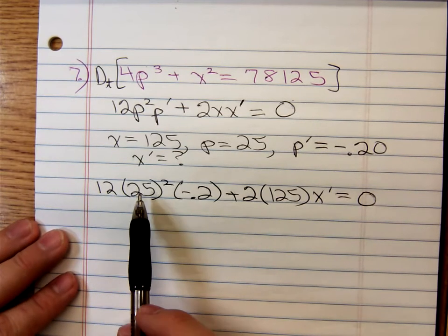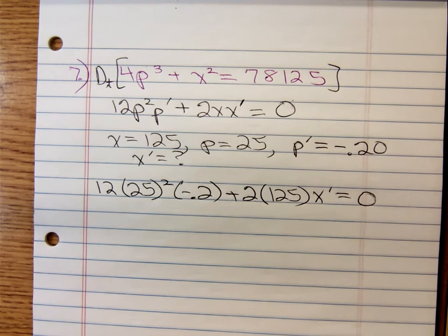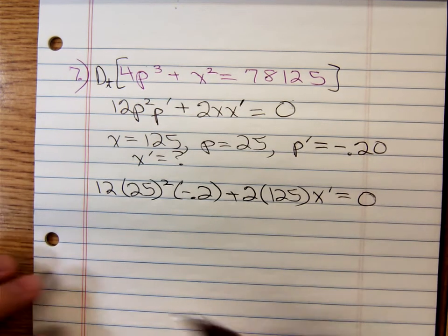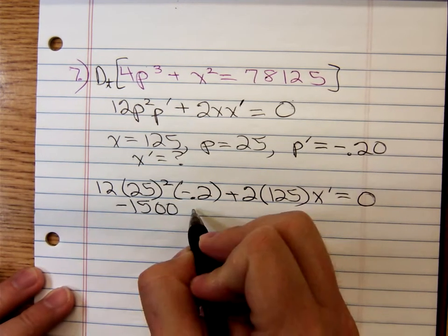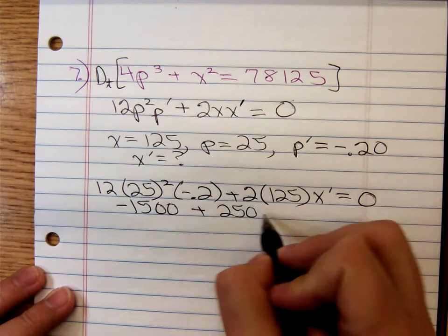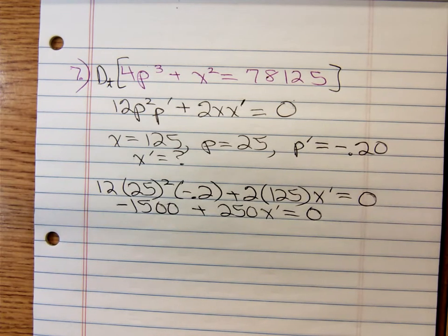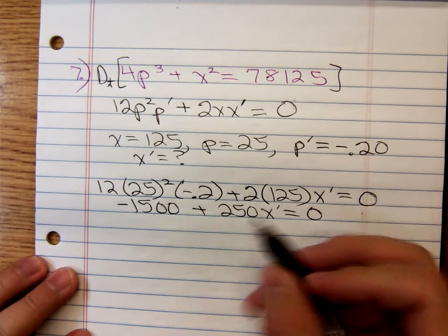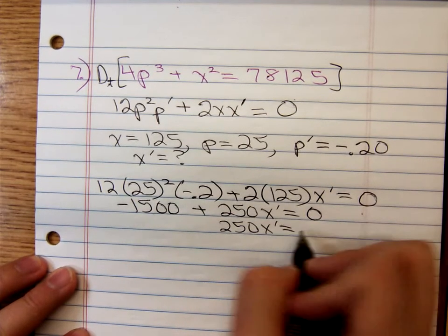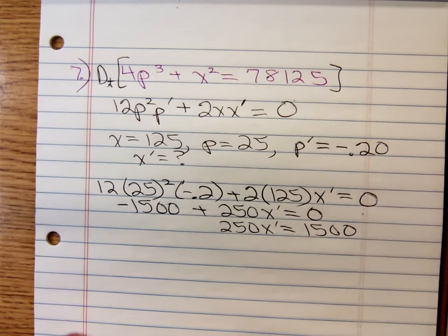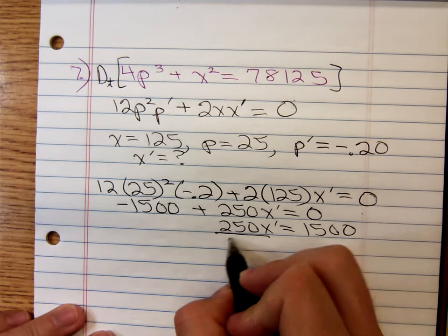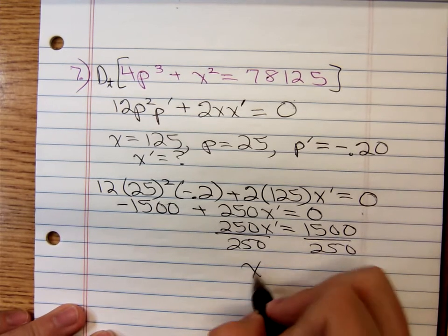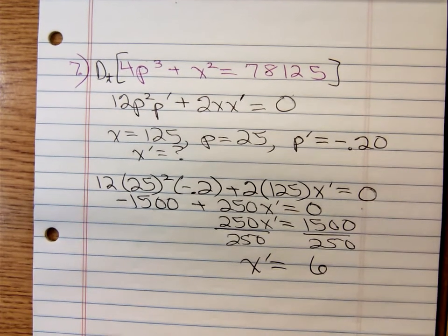So 12 times 25 squared minus 0.2. That's negative 1,500 plus, that's 250 X prime equals 0. Add 1,500 to both sides. That gives us 250 X prime equals positive 1,500. Divide both sides by 250. I can do that one in my head and get that X prime is equal to positive 6.